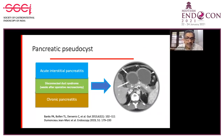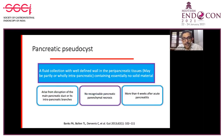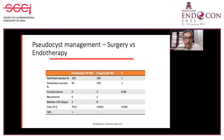Pancreatic pseudocysts do not have any necrotic material. They can occur with chronic pancreatitis, acute interstitial pancreatitis, or disconnected duct syndrome. A pseudocyst develops after four weeks of acute pancreatitis and has a well-defined wall. It has been shown that endotherapy has equal success rate as surgery and fewer complications.